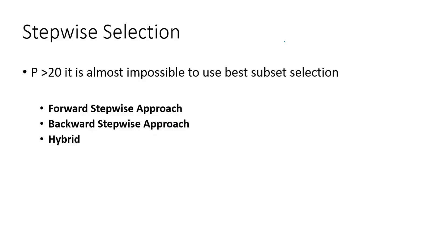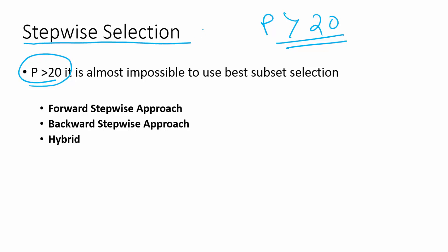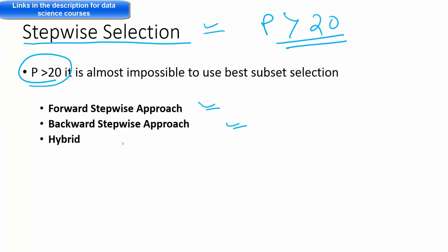The problem with subset selection is that when you have high dimensions or the number of features is greater than 20, it is very difficult to do the computation — it's almost impossible. So best subset selection is impossible when p is greater than 20. That's where you use what is known as stepwise selection, and there are three types: forward stepwise, backward stepwise, and a hybrid approach.